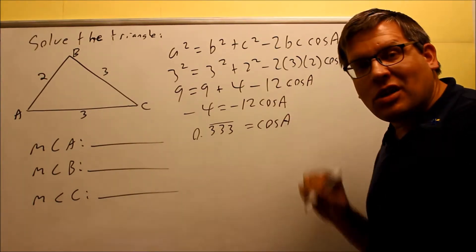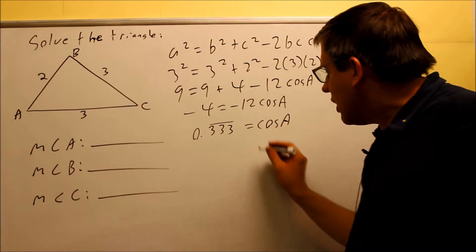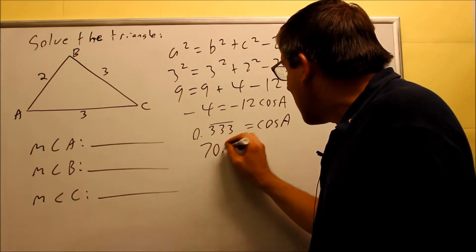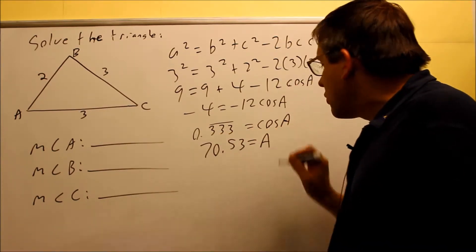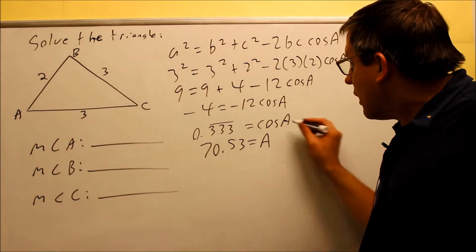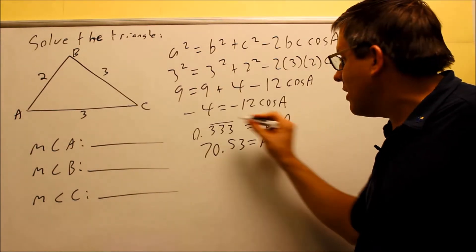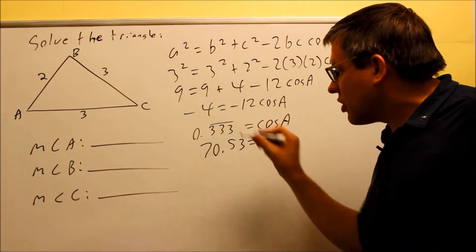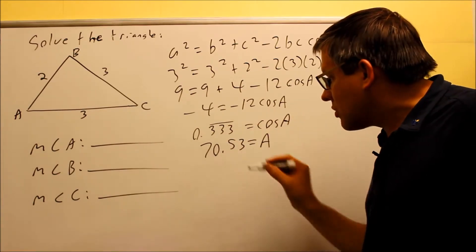I just need to take the inverse cosine of both sides. Taking the inverse cosine of 0.3 repeating gives 70.53 degrees, which should be the angle you get for A.